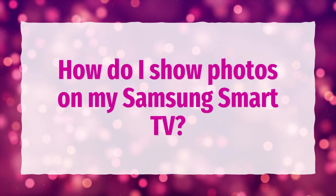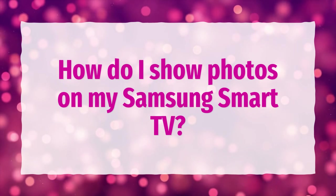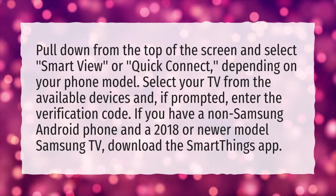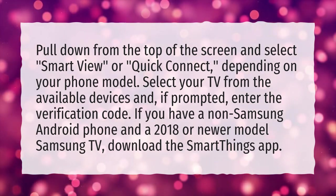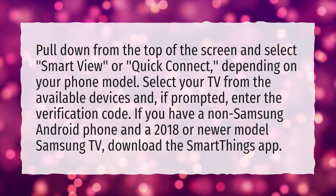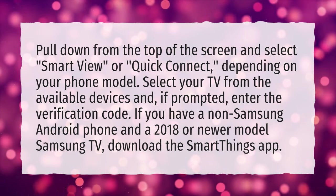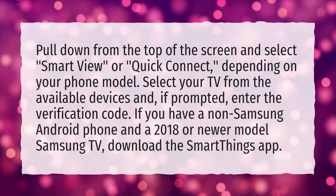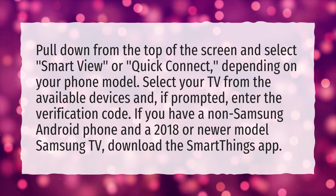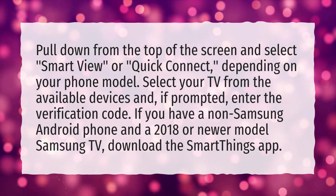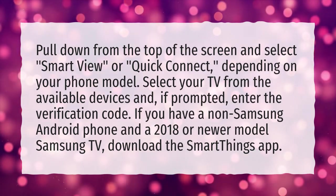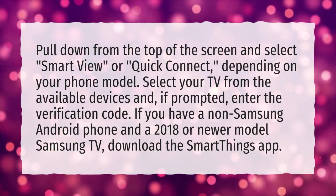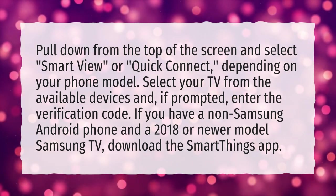How do I show photos on my Samsung Smart TV? Pull down from the top of the screen and select Smart View or Quick Connect, depending on your phone model. Select your TV from the available devices and, if prompted, enter the verification code. If you have a non-Samsung Android phone and a 2018 or newer model Samsung TV, download the SmartThings app.